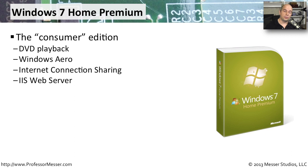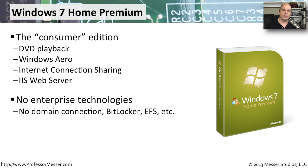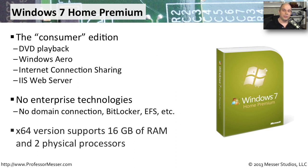If you're at home using Windows 7, you're probably using Windows 7 Home Premium. This is the version you'd buy at a big box store or find included with many home computers. It allowed DVD playback, supported the graphical Aero interface, and enabled internet connection sharing and running your own web server. However, it was not designed for business, so it had no Active Directory connectivity or advanced encryption. Windows 7 Home Premium offered a 64-bit version supporting up to 16 gigabytes of RAM and up to two separate physical processors.